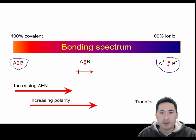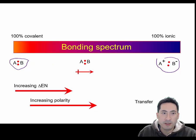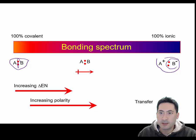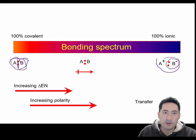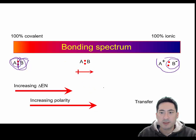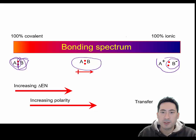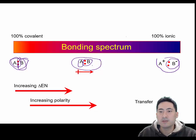Actually, most compounds are somewhere in between where it's not completely sharing and it's not completely stealing. These electrons have been stolen and these are sharing. So a lot of compounds have some element of ionic character and some element of covalent character. These compounds in between have polar covalent bonds — so it's not completely stolen by B, but B is taking a larger share of it, closer to the B nuclei.